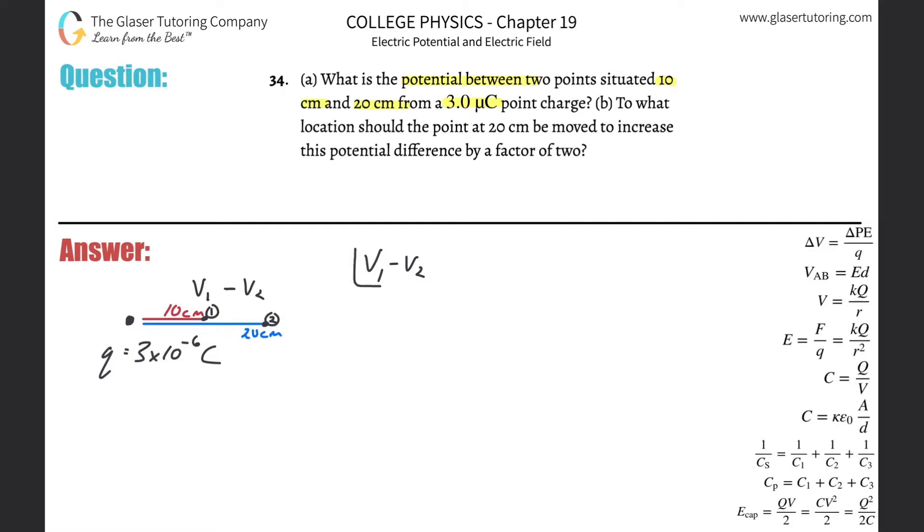We can take this V1 minus V2, and now we can find a formula that talks about the voltage at a point relative to a point charge. That's this formula over here on the right hand side. Basically, I can do a substitution where each of them are going to be k times the charge q divided by the distance between the charge and the point. I put little subscripts down here: one and one, minus then k times q2 over r2.